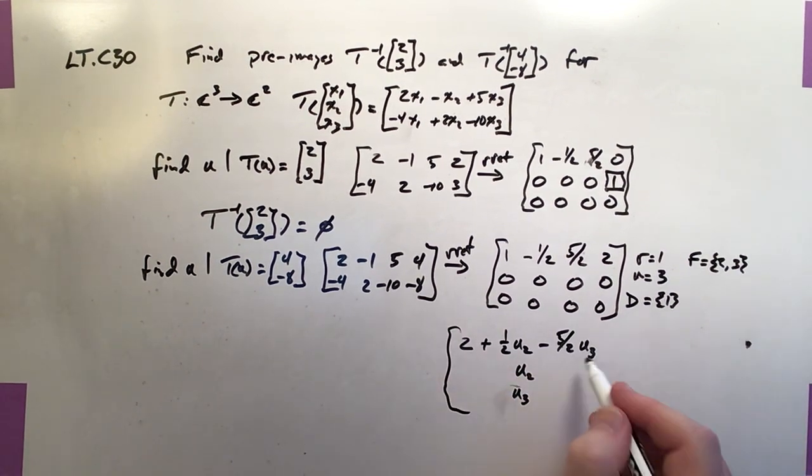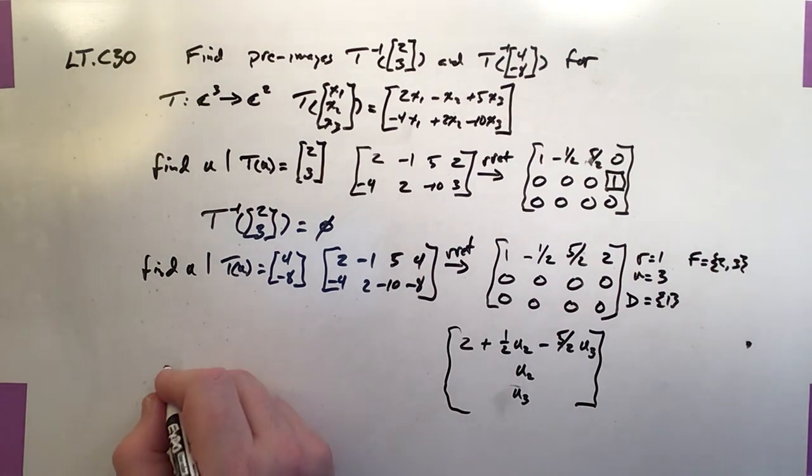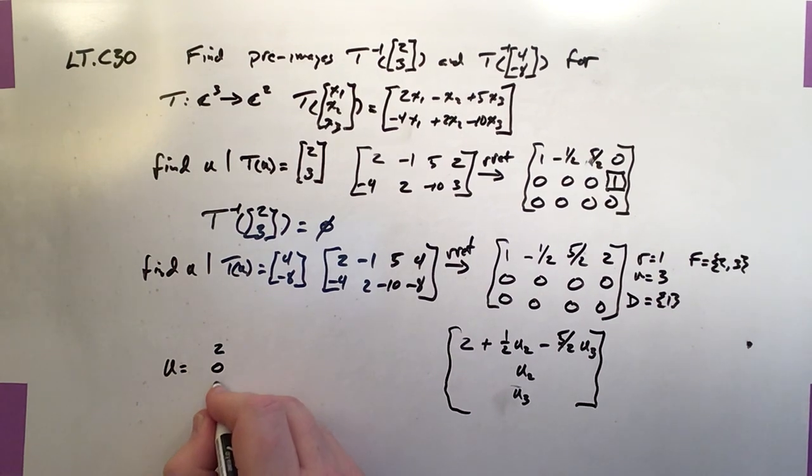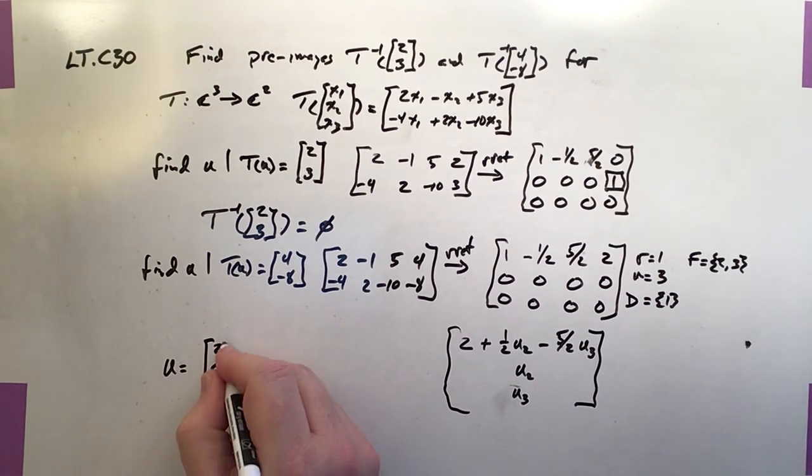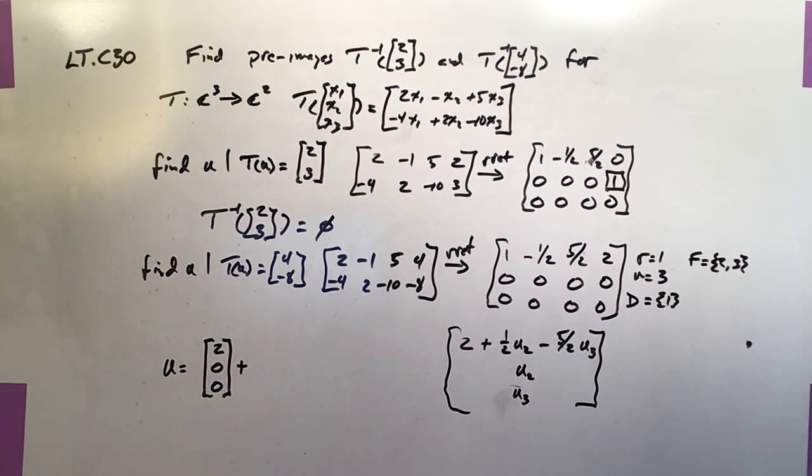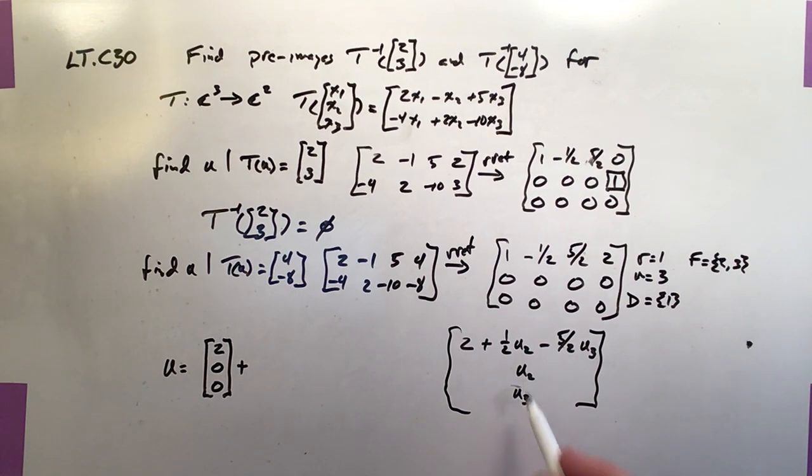So if we were to build a matrix that delivers this pretty consistently, then that would have to be my solution for u would have to be equal to, well, it's [2, 0, 0]. Because that's got to be there all the time. And then we would add onto it, plus the u2 produces [1/2, 1, 0].